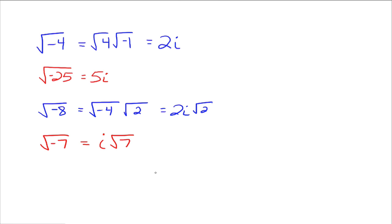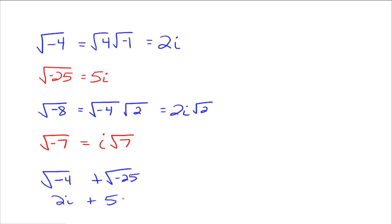Let's do one more. Say you had the square root of negative 4 plus the square root of negative 25. The square root of negative 4 goes to 2i, the square root of negative 25 goes to 5i, and just like we would with like terms, 2i plus 5i is 7i. So the square root of negative 4 plus the square root of negative 25 equals 7i.